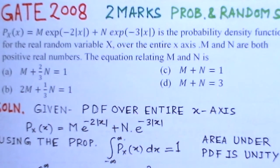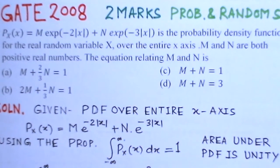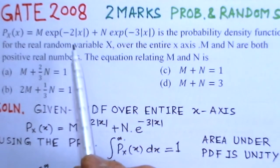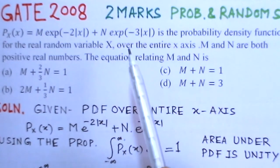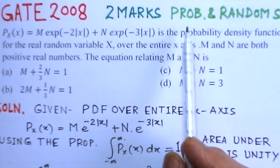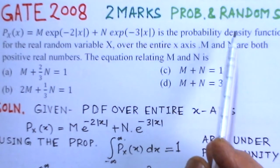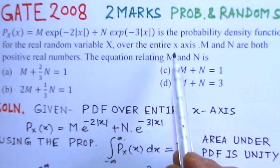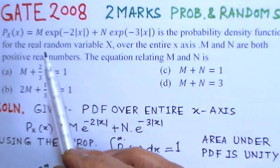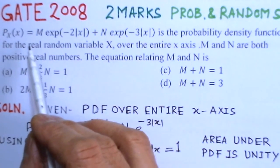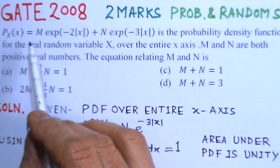The present video solution is of the Gate 2008 problem. It is a two-mark question and the topic is probability and random variables. First we will read out the problem and then see the solution.